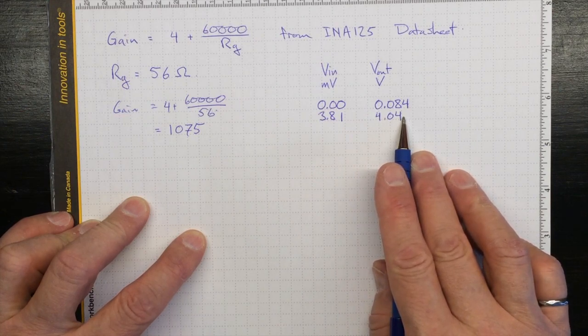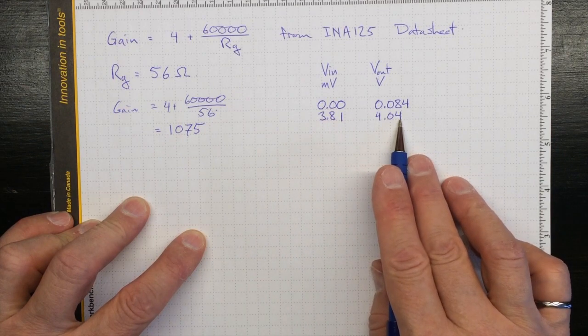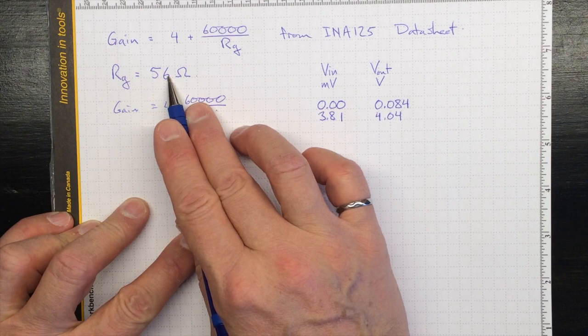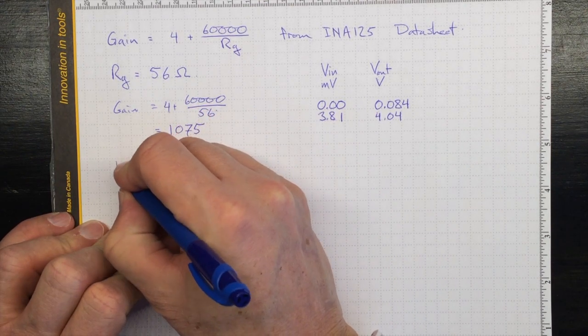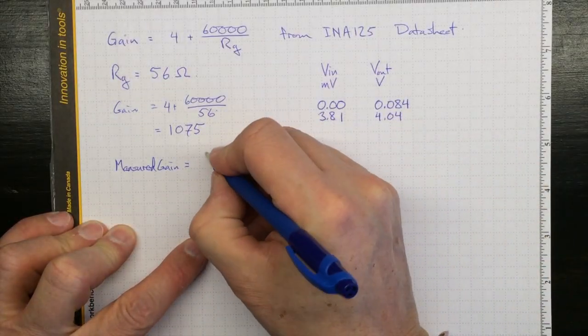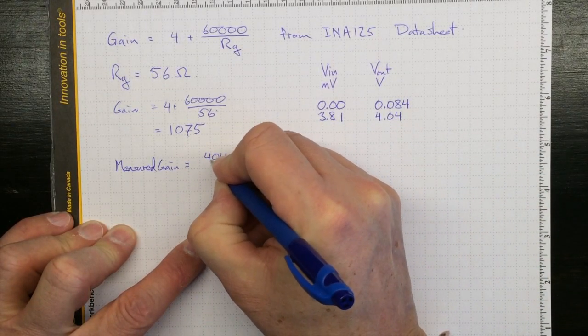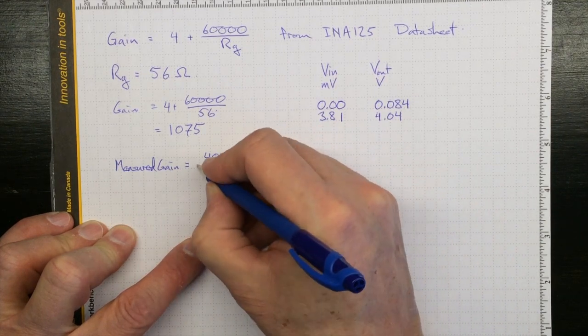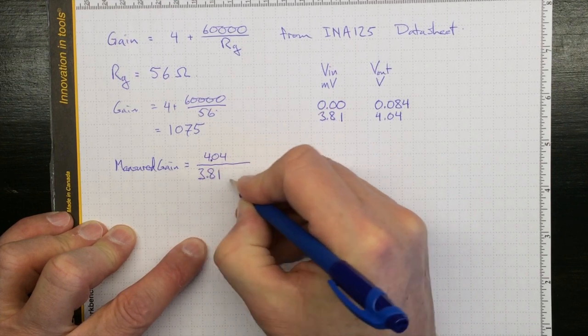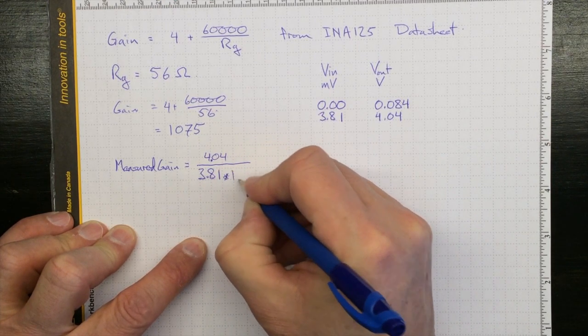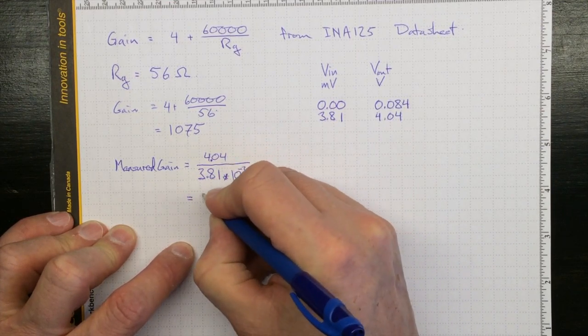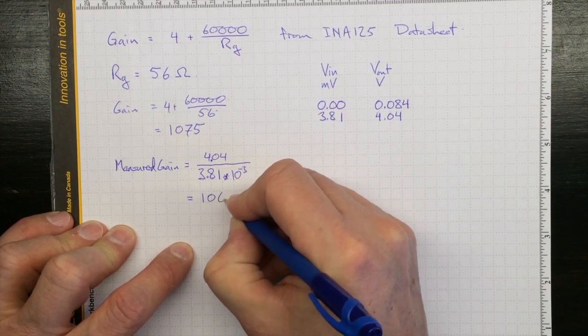But if we do the calculation for this gain, we can get a better answer than just taking the markings on the resistor at face value. So we can also get a measured gain, equal to the output voltage, 4.04 volts, divided by the input voltage, 3.81 millivolts, or 3.81 times 10 to the minus 3 volts. And that number is 1,060.